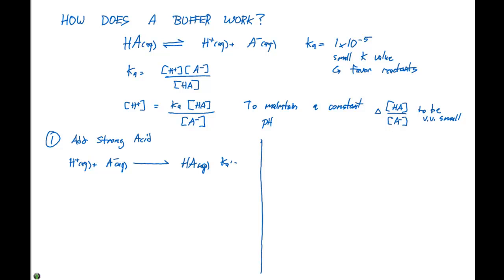And our KA prime is gonna equal one times ten to the fifth, which is the reciprocal of our initial KA. So that means this equilibrium is gonna lie over here to the right, which is the way I've shown this. So as we increase the concentration of HA, our concentration of A minus is going to drop. So that means our delta HA divided by A minus is small, which is exactly what we needed here.